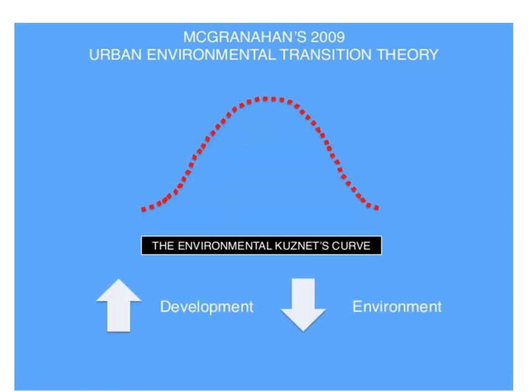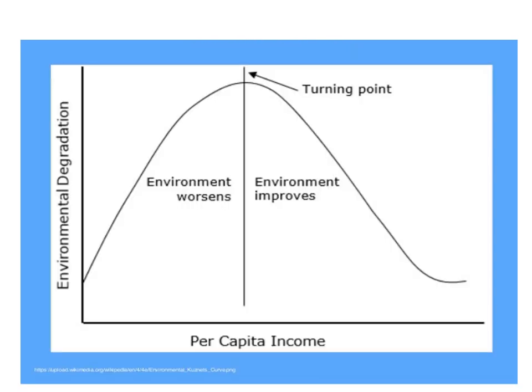This slide refers to McGranahan's 2009 urban environmental transition theory, in which development and environment is shown by the environmental Kuznets curve — as development progresses, the environment initially degrades. This slide is a plot of environmental degradation versus per capita income, where the environmental situation worsens and then improves, with the turning point shown.